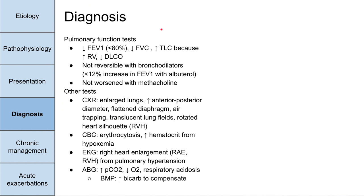How do we diagnose COPD? First, we can do pulmonary function tests. The forced expiratory volume in one second (FEV1) is low — less than 80% of what's expected for that patient. The forced vital capacity (FVC) is also low. The total lung volume is high because the lungs have a high residual volume — the amount of air left after exhaling completely. Because air is trapped in COPD, there's high residual volume and high total lung capacity. The diffusion capacity across the lungs (DLCO) is also low.